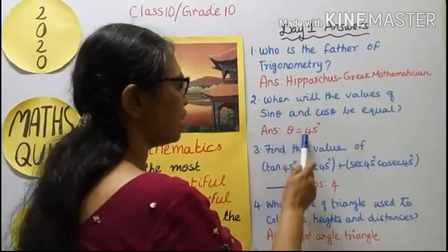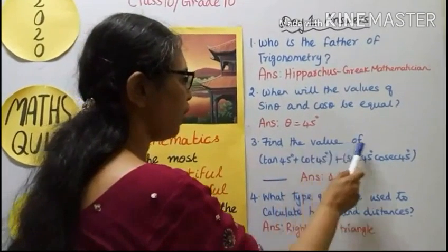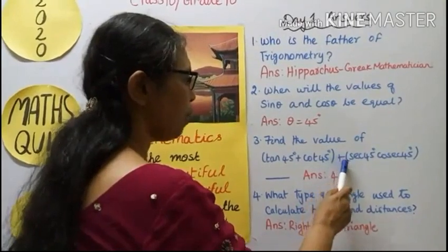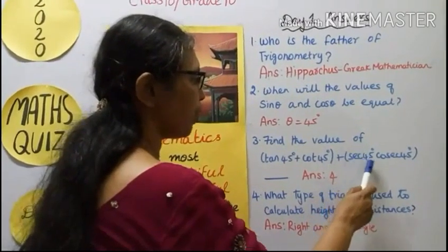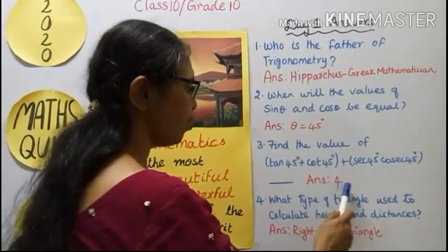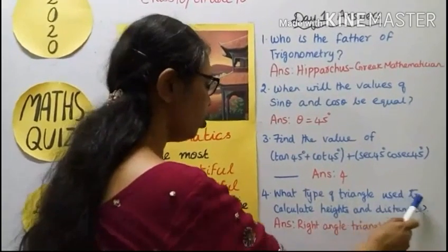Answer: Theta equal to 45 degrees. Third question: Find the value of tan 45 degrees plus cot 45 degrees plus bracket secant 45 degrees into cosecant 45 degrees. Answer: 4. Fourth question: What type of triangle is used to calculate heights and distances?